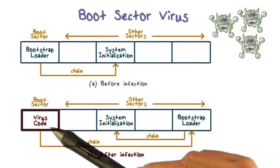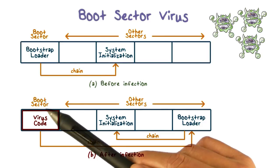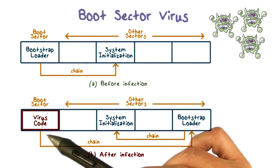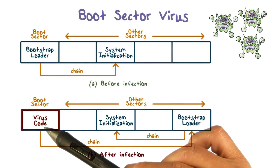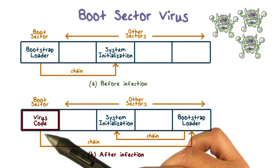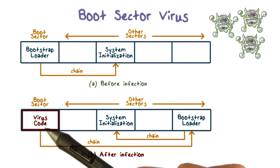When a boot sector virus infects a system, the virus code is inserted in the boot sector. The reason is that the boot sector is a special place in the hard drive, and the code there will always be executed first when a system boots. So by putting virus code there, whenever a system boots, the boot sector virus will run.